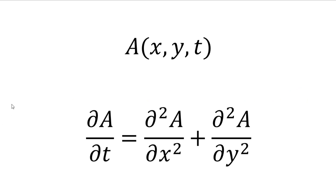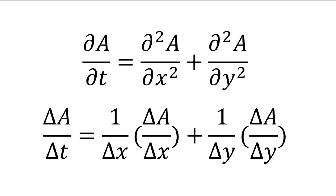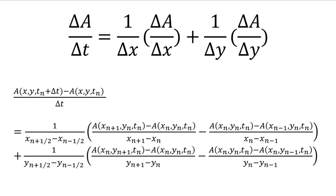A is a scalar of physical quantity and is a function of x, y, and t. It looks like a function of two-dimensional heat conductivity. To discretize the function, I change the del symbol into the delta symbol here. When I write all the details, the function changes into this form.